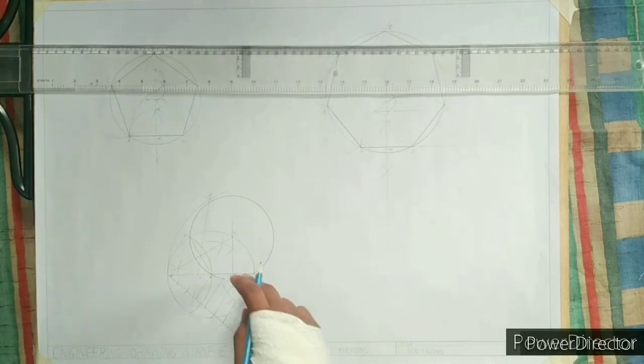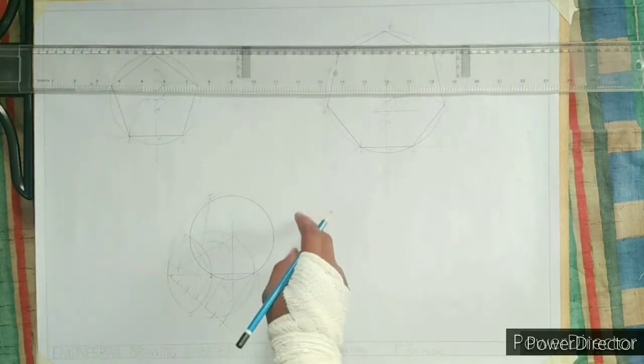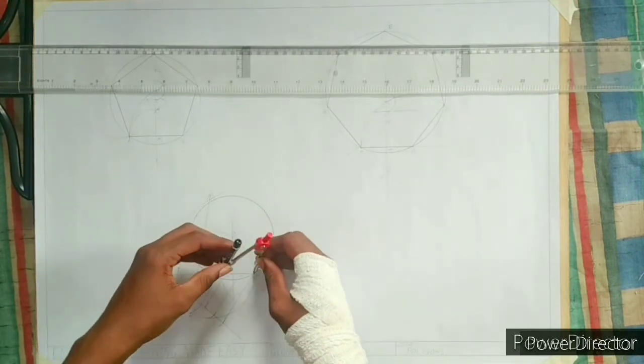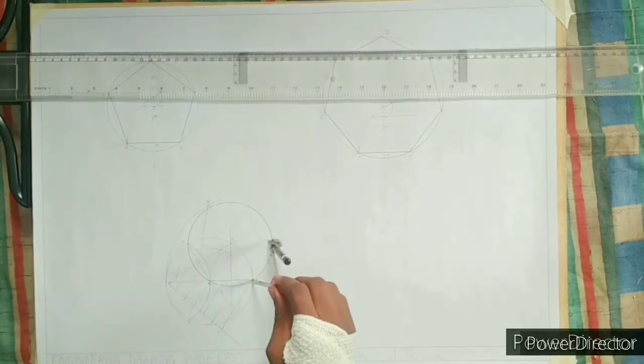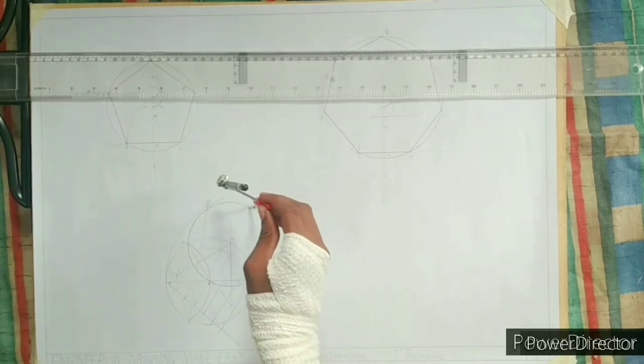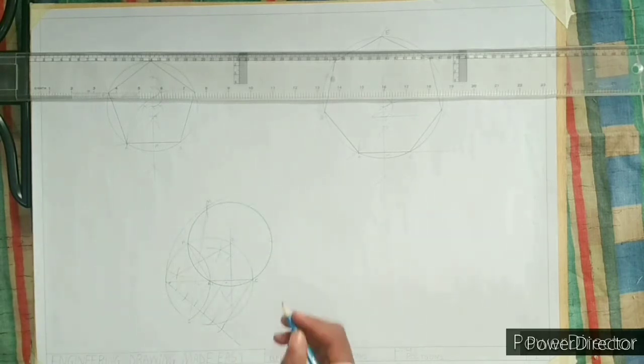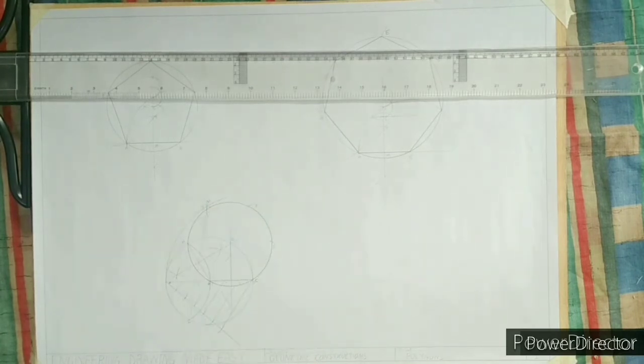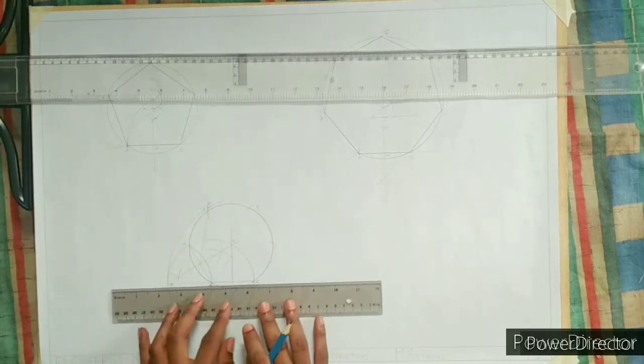Step 8, with C as center and CB as radius, draw an arc to cut the circle at point E. Repeat the step to get points F and J. Now, join the points to get the regular hexagon.